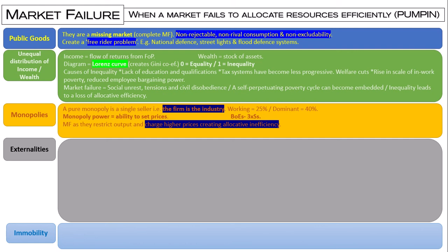Final question on monopolies: see if you can identify arguments for monopolies — why they might be good — and arguments against. For monopolies, you have things like dynamic efficiency, which is reinvesting supernormal profits into improving the quality of the final product. They might also experience economies of scale, where as output increases average costs fall, which might benefit consumers through lower prices. They might also be able to compete internationally — domestically they're a monopoly, but in the international market competition keeps them on their toes.